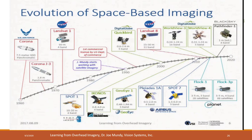Now looking at Landsat satellites, launched by NASA, we can see their history. Landsat 1 had a spatial resolution of 60 meters and four bands — typically three visible bands and one near-infrared band. Landsat 8, launched more recently, has 11 bands, with improved spatial resolution of 15 meters for the panchromatic band and 30 meters for the other bands.